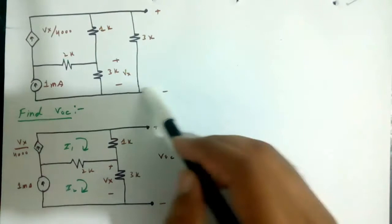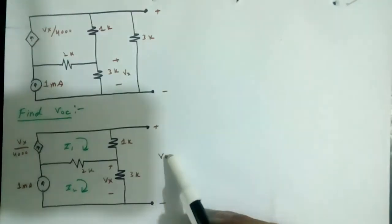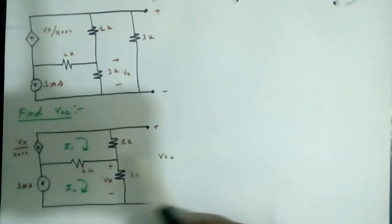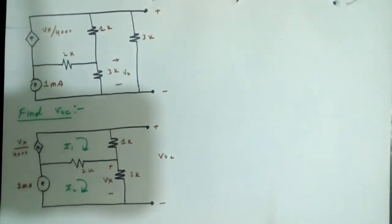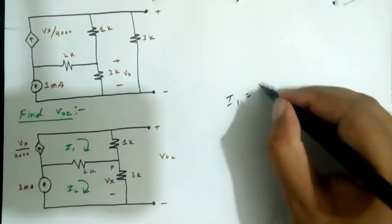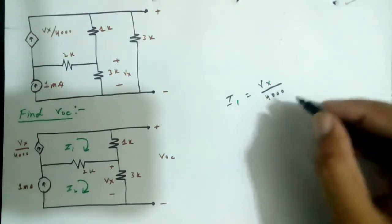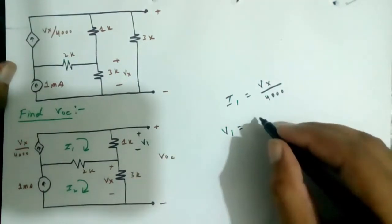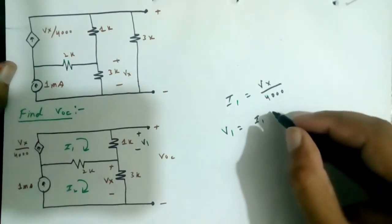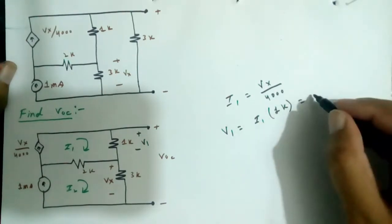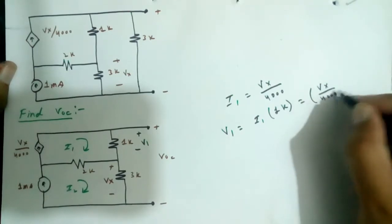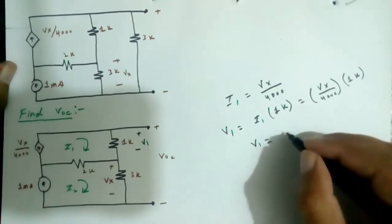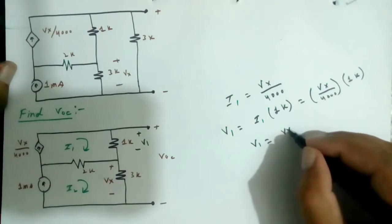First of all we remove this resistor. By removing this resistance we find Voc, means open circuit voltage. You can see there are two loops. In the first loop, I1 is equal to Vx over 400. V1 is equal to I1 times 1kΩ, so I1 is equal to Vx over 400 times 1k, giving V1 equal to Vx over 4.